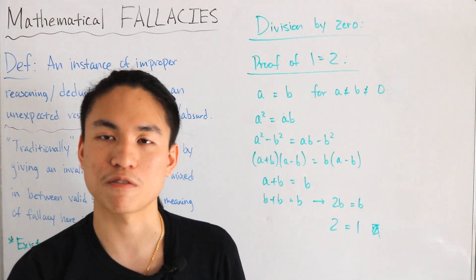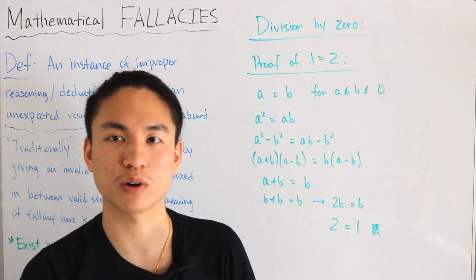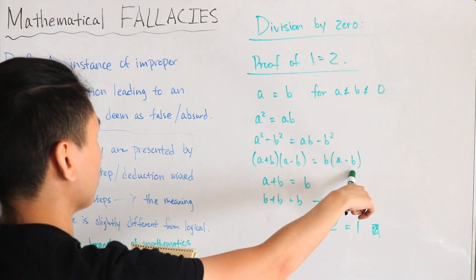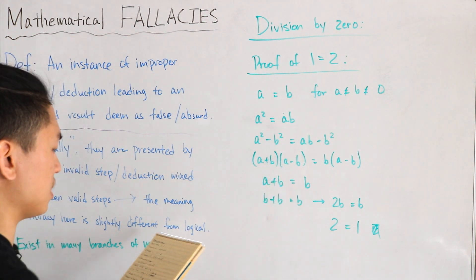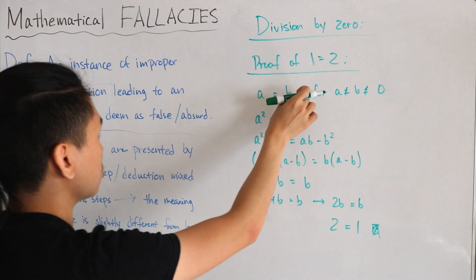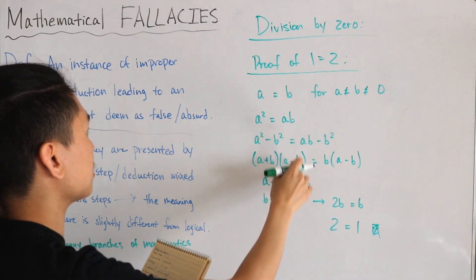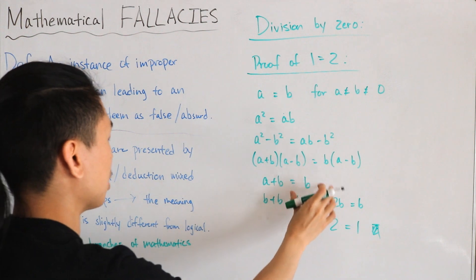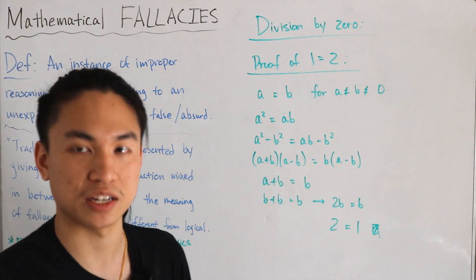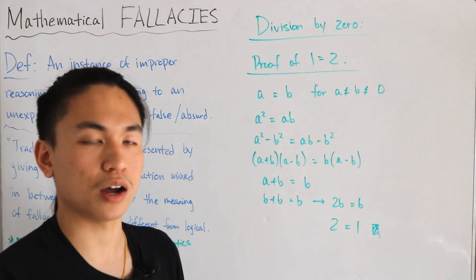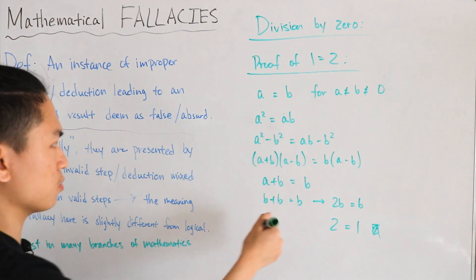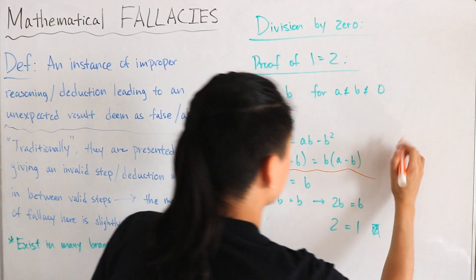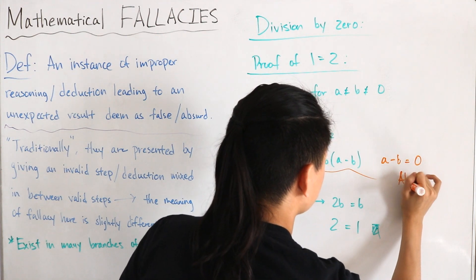So where does the fallacy exist? Feel free to pause and think about it. The fallacy comes from the step where we divide both sides by (a - b). Since a = b, we have a - b = 0, so this is actually a division by zero, which is undefined. That's the absurd step — dividing by (a - b) when a - b = 0 is what makes the entire proof invalid.